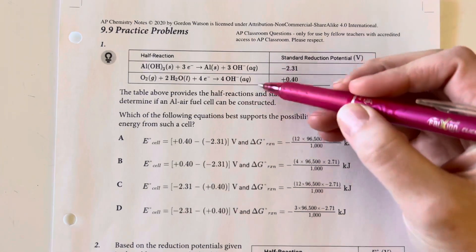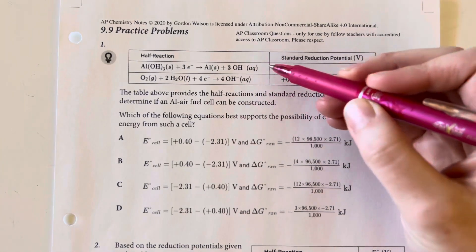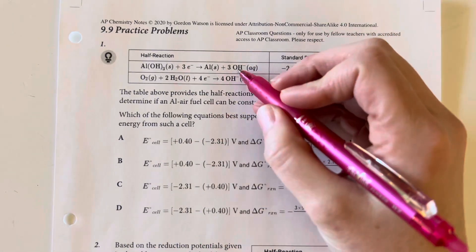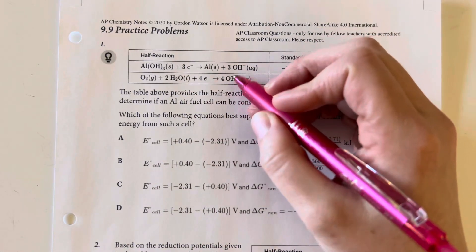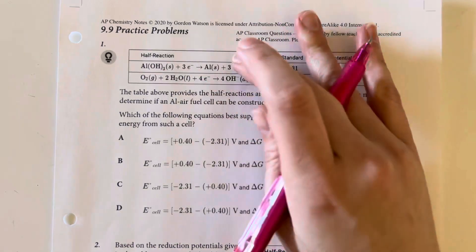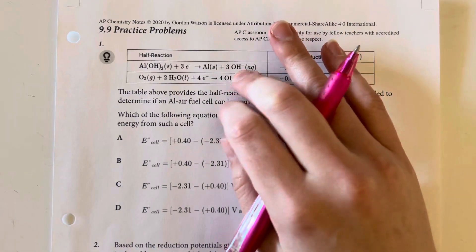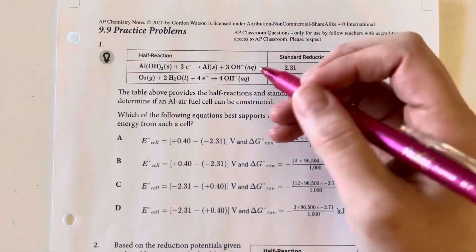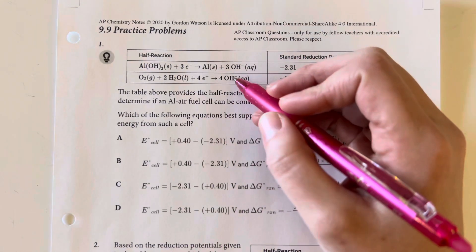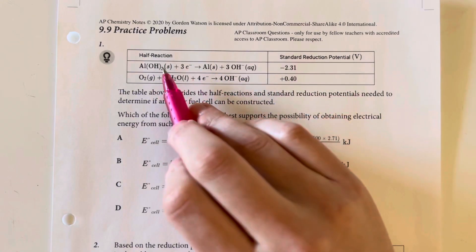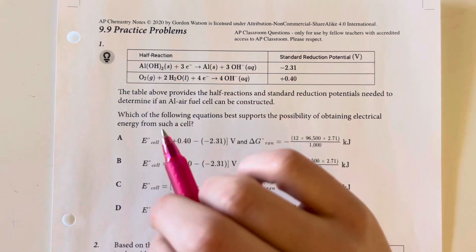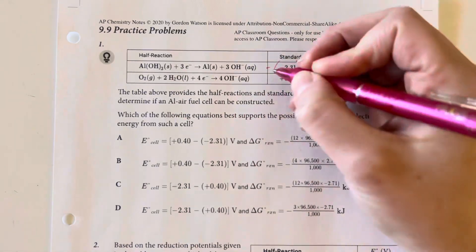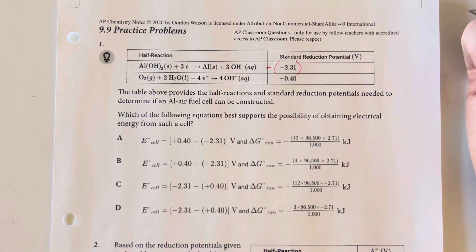First, we need to see which direction these equations need to go. We can see that originally hydroxide is going to be on both of the product sides for these initial reactions. However, hydroxide is needed to react with the aluminum to produce aluminum hydroxide, which means we do need to reverse this reaction, and our sign will flip.